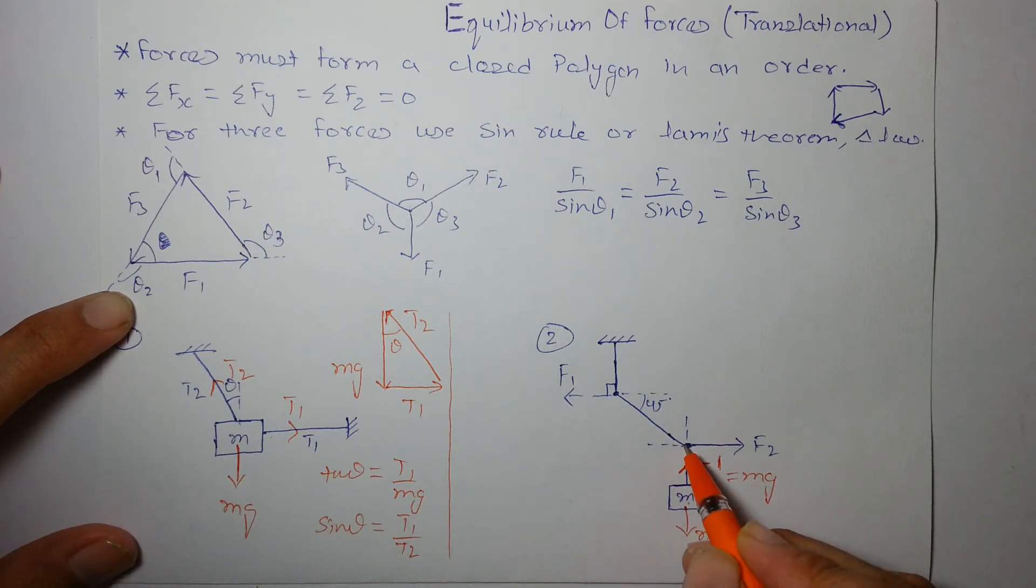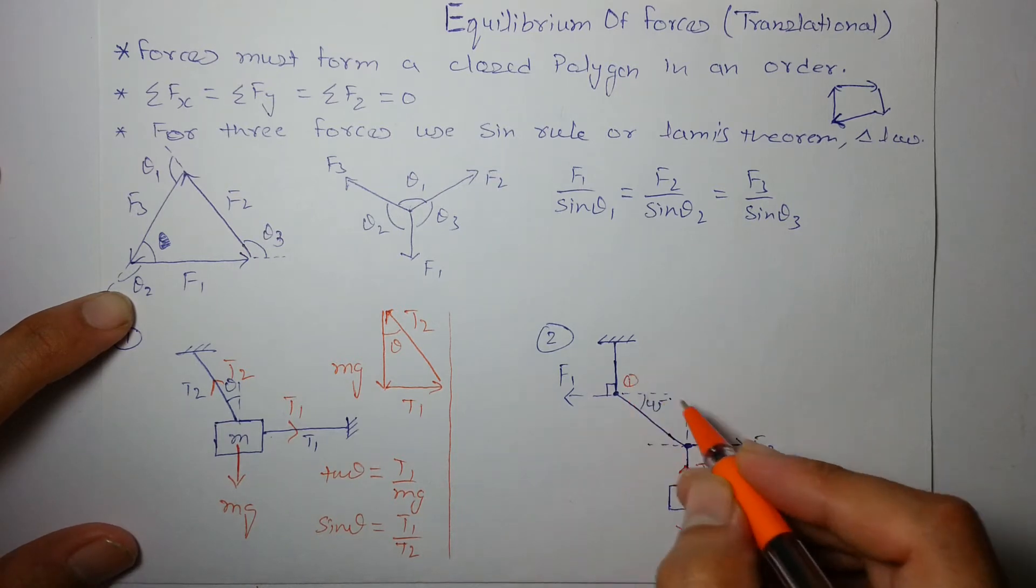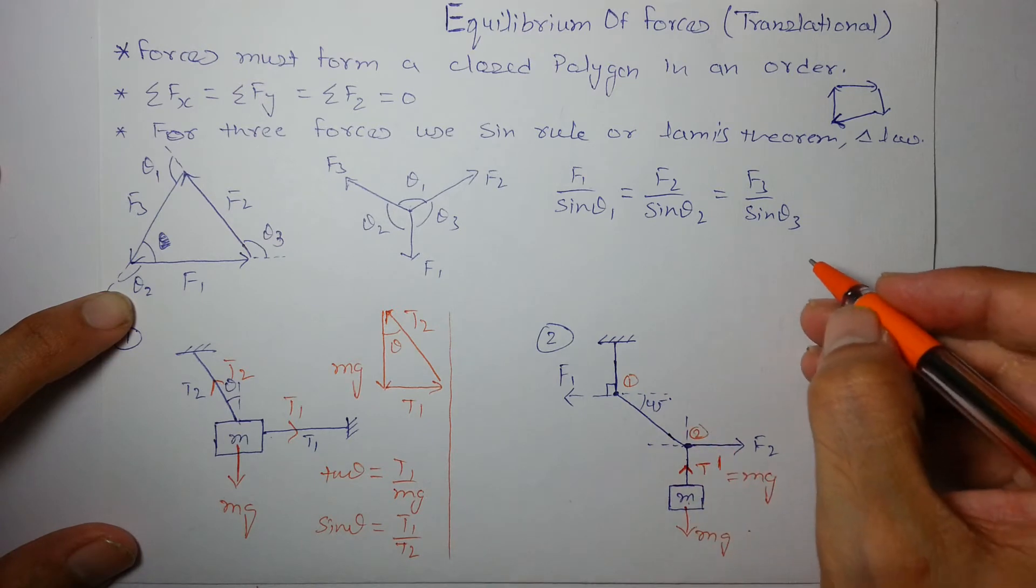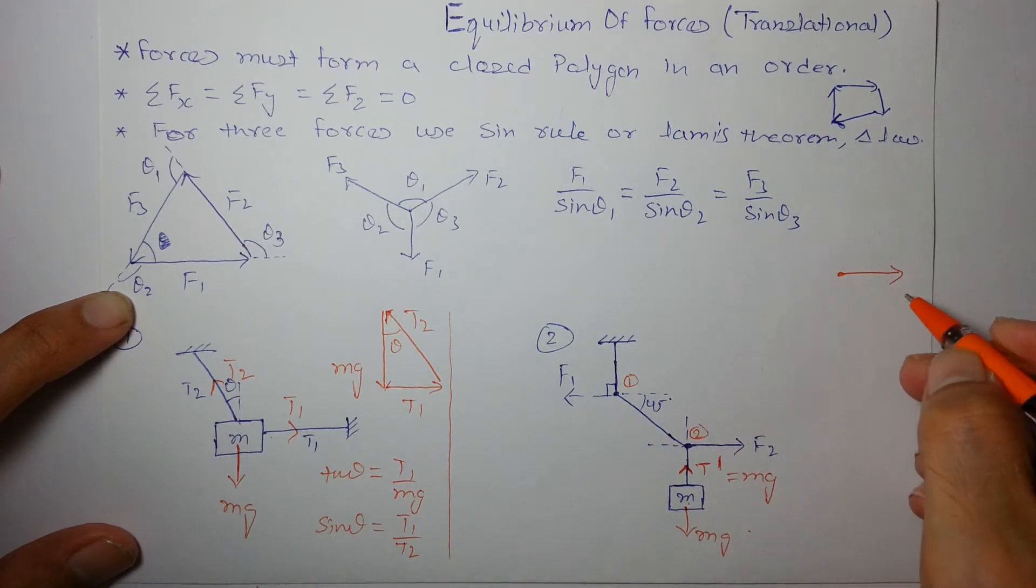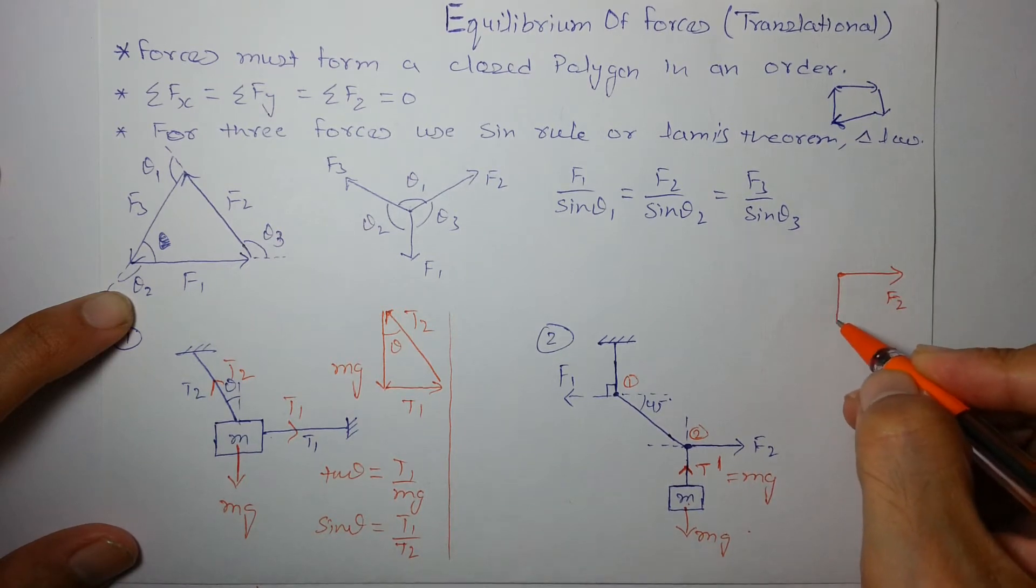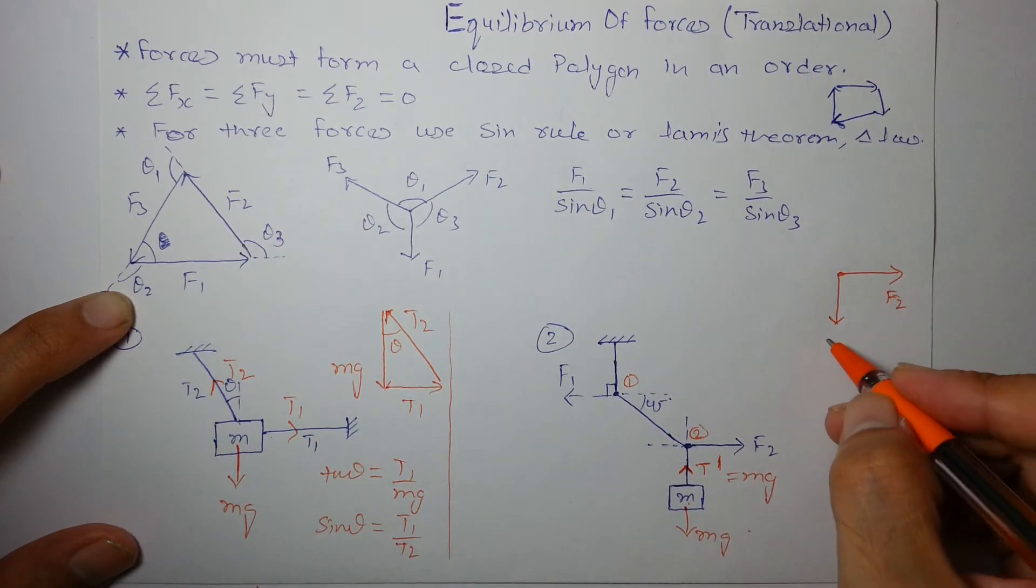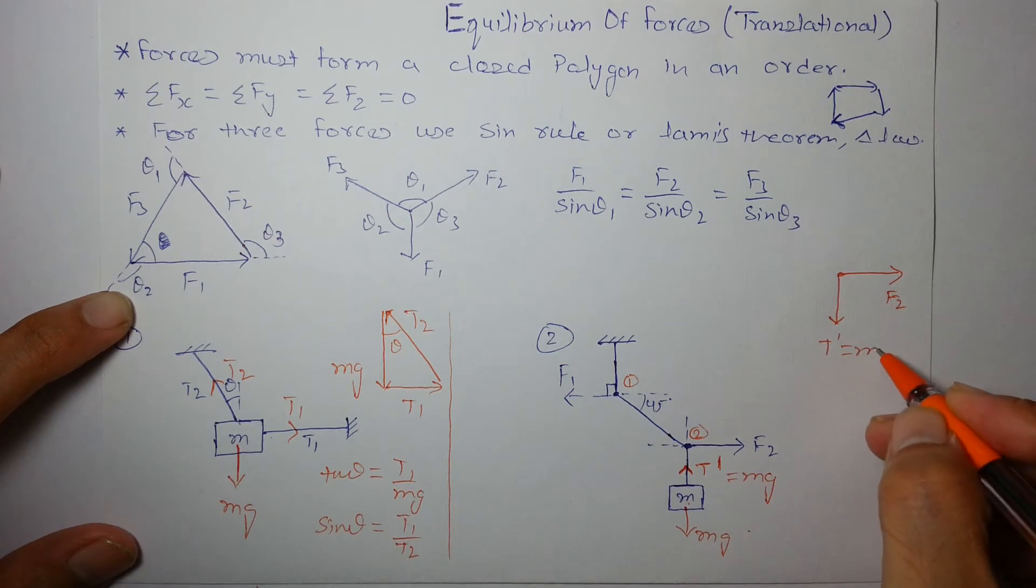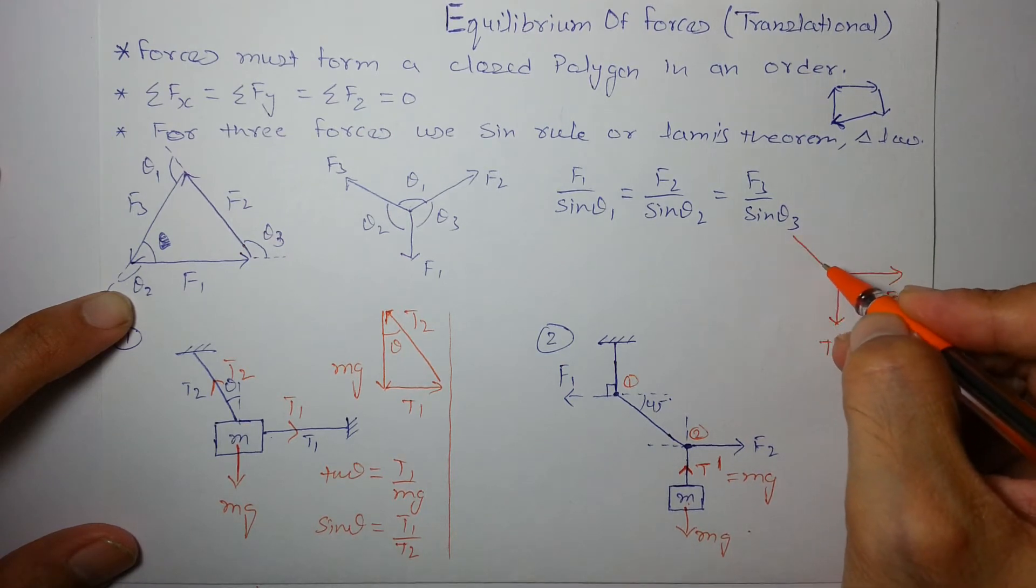Coming on to this point, let's say this is point 1, this is point 2. So, FBD of point 2 says, this is force f2, this is force t dash which is equal to mg and there is another force, let's say t2.